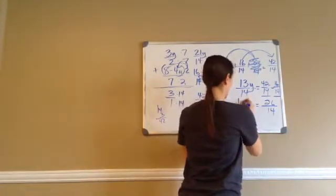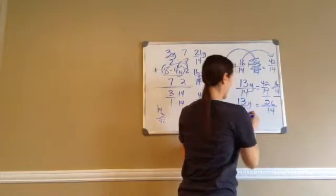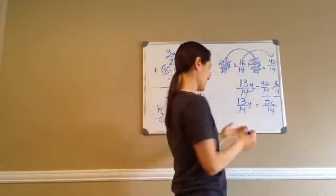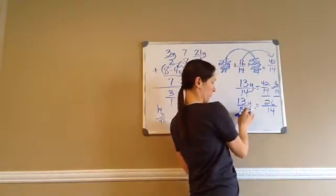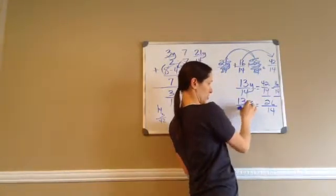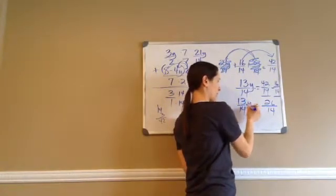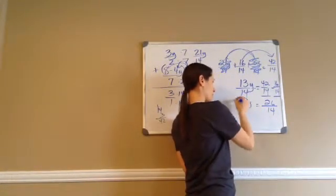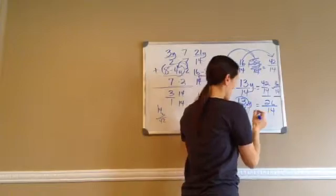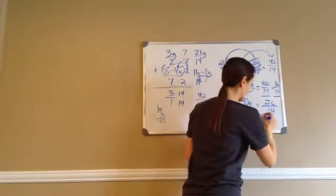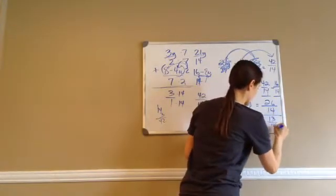Then we're just bringing everything else down. Now you have to see this problem as 13 over 14, fraction, times y. We're trying to get y by itself, so this times 13/14ths becomes divided by 13/14ths.